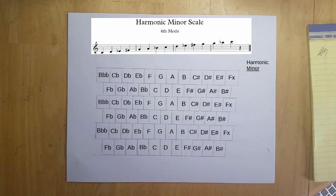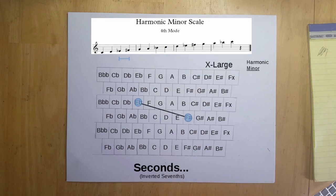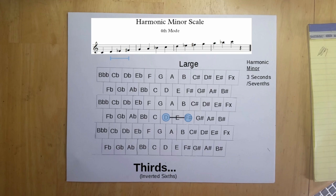Similarly, the harmonic minor scale contains three types of 2nd and 7th, two types of 3rd and 6th, and three types of 4th and 5th.